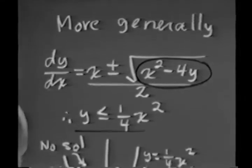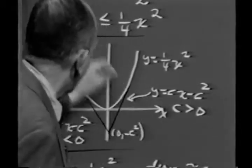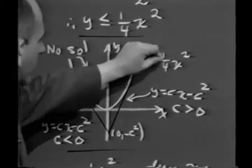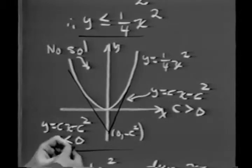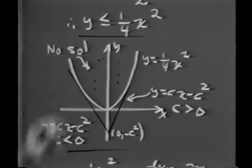And what that means is if I draw the graph now, see? In other words, this is the x-axis, the y-axis. This is the parabola y equals 1 fourth x squared. There are no solutions that pass through any points in here. No solutions in here.